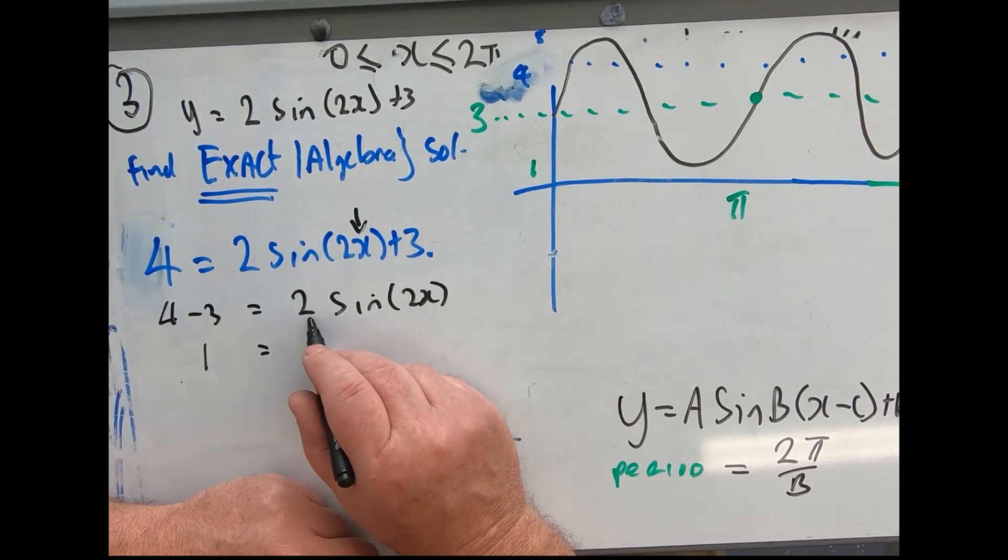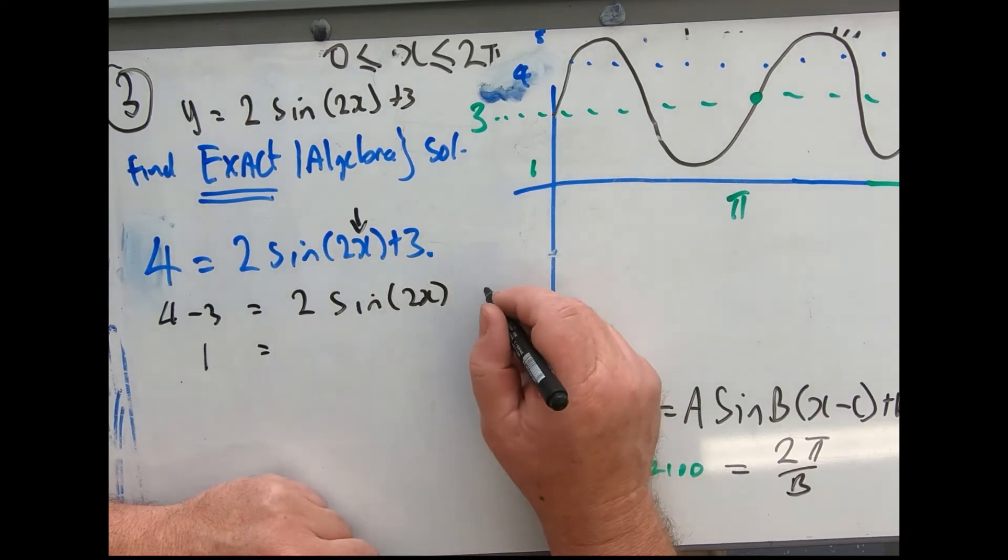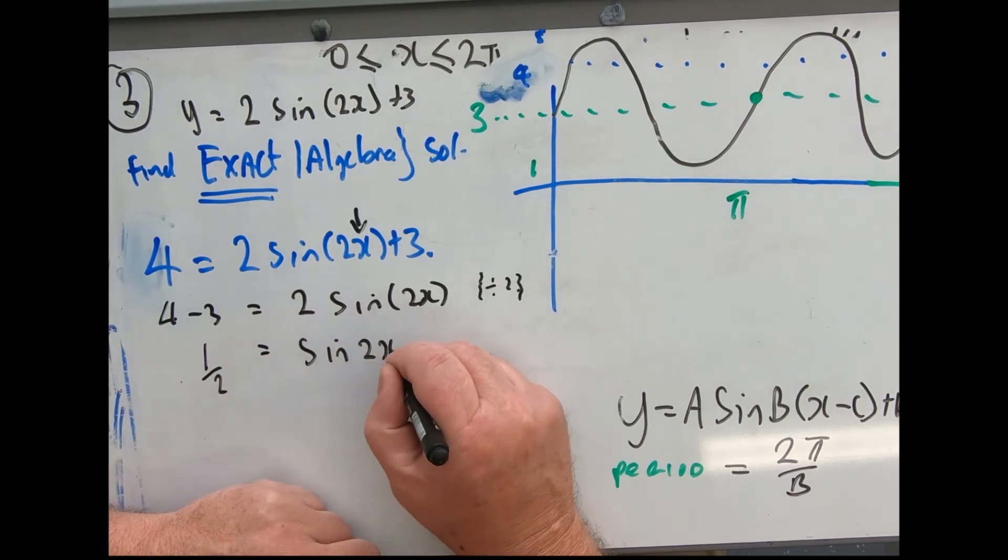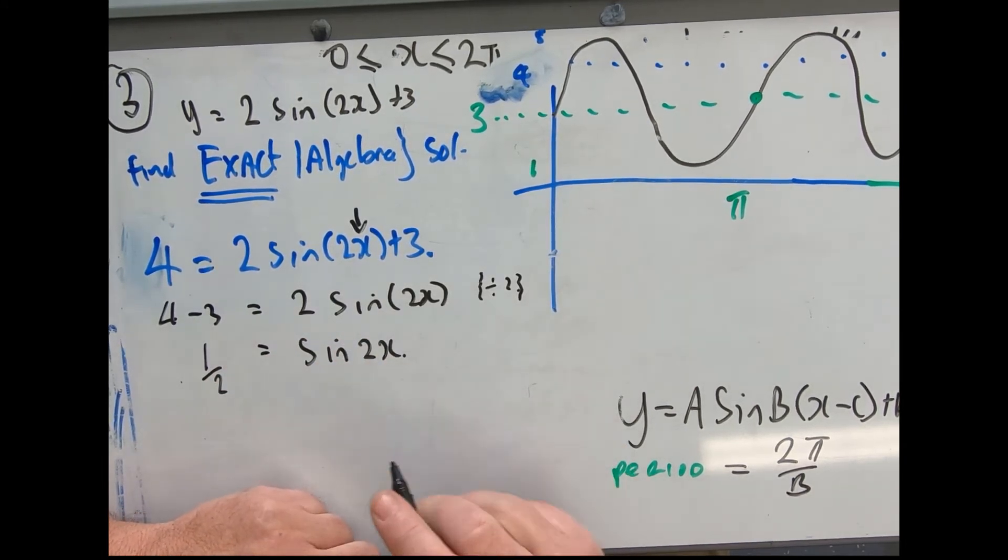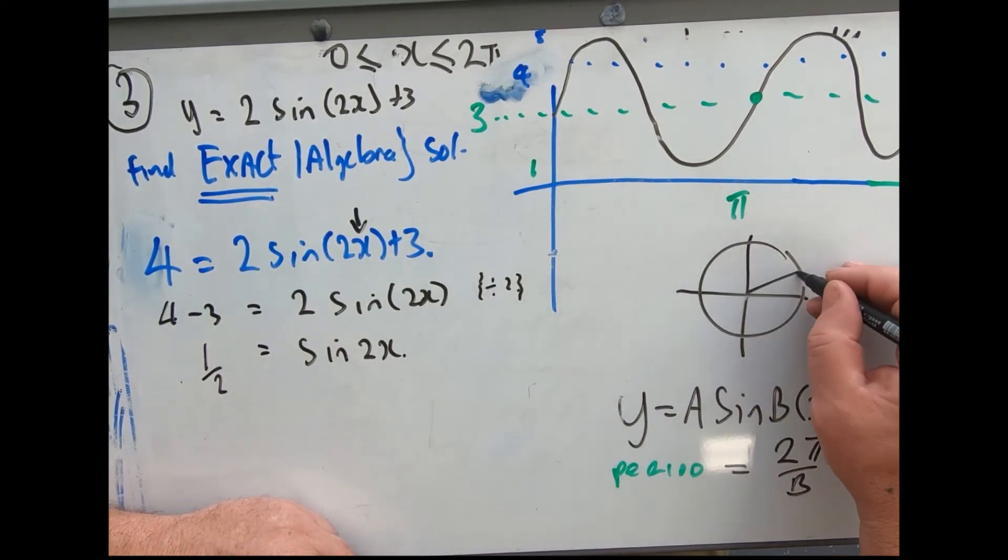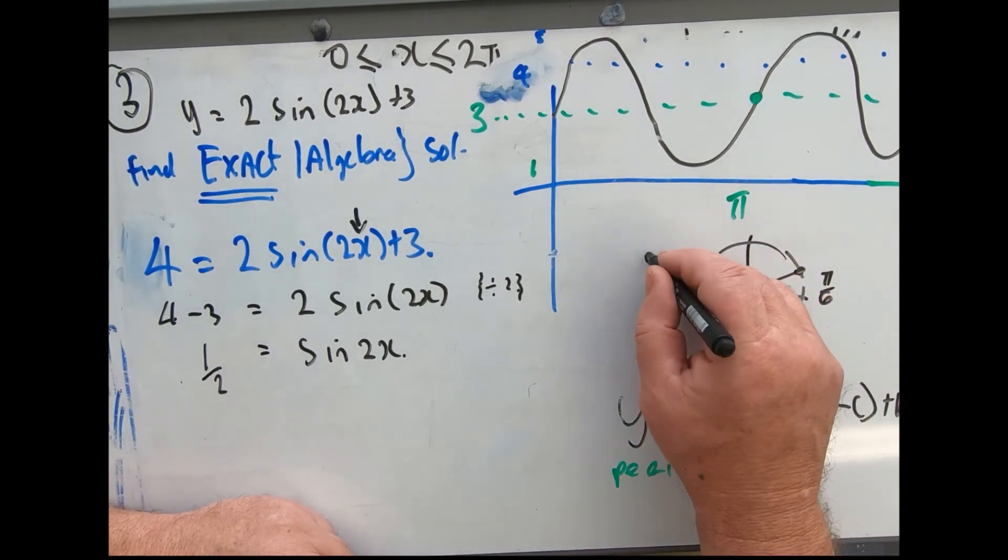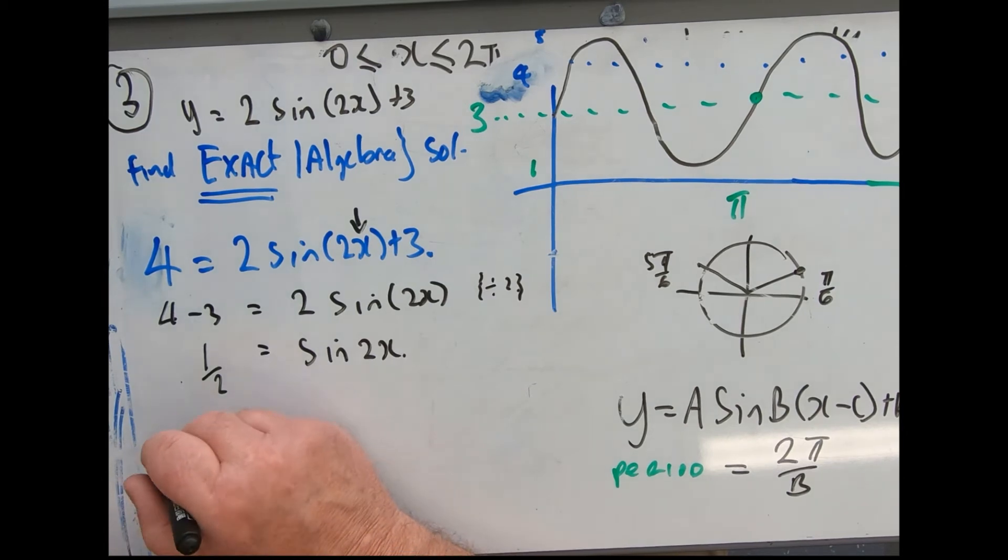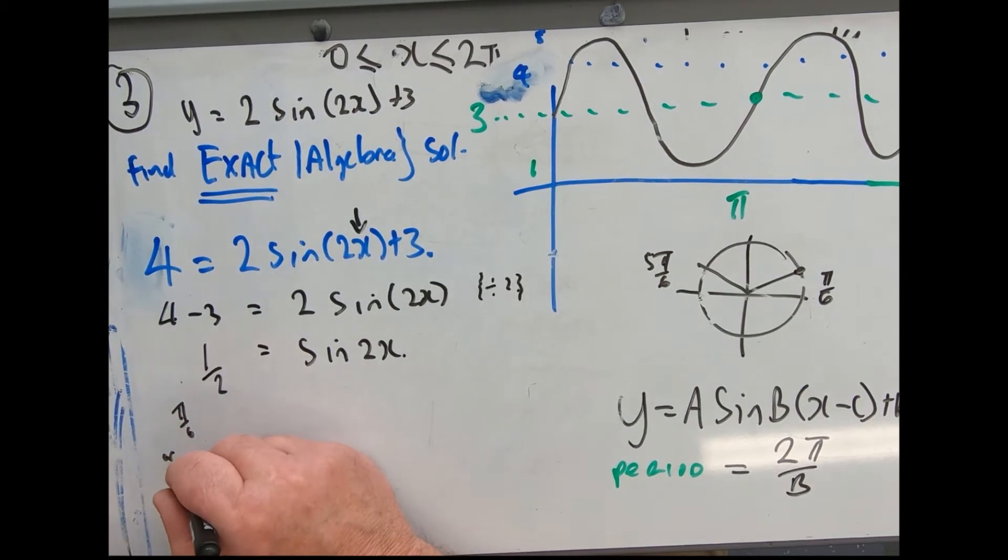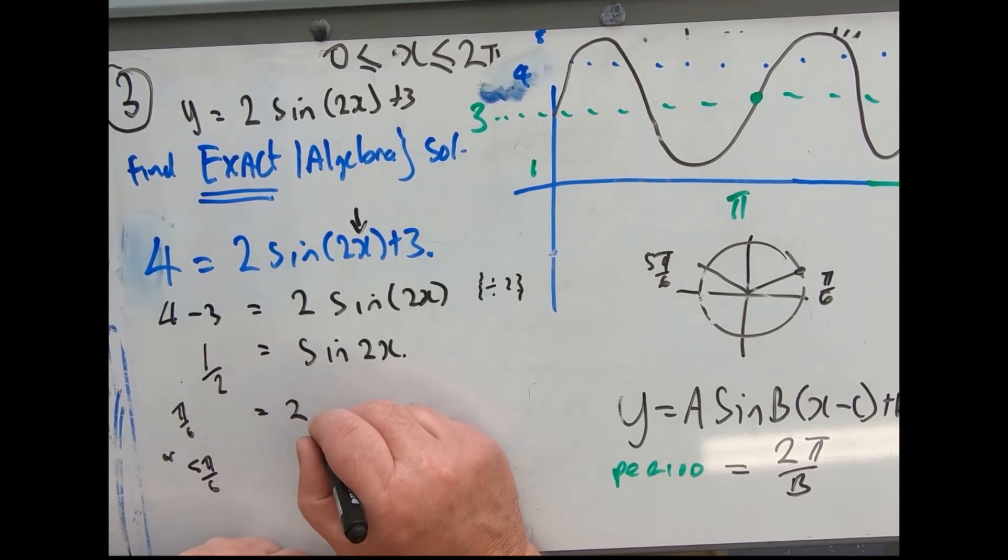I think I'm going to divide by 2 now, so that's a half. A half equals sin 2x. Okay, now for sin and the unit circle - a half, I don't have a clear one in front of me but I think that's one answer: π on 6. And there's one other: 5π on 6. So here I have π on 6 or 5π on 6 equals 2x.